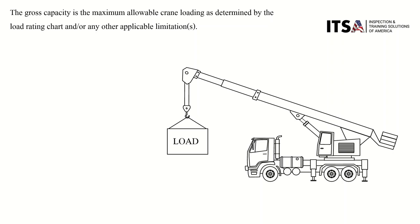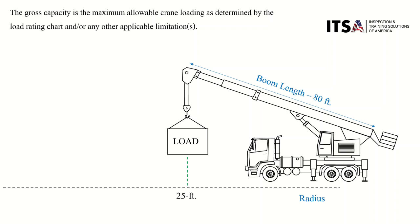Let me give you an example. Let's say we have 80 feet of boom and a 25-foot radius. What the chart is saying is that once you line these two numbers up, it gives you a number — that's the gross capacity — and it's based on tipping or structural limits.